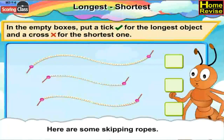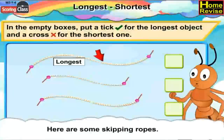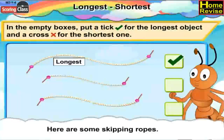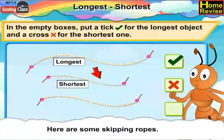Here are some skipping ropes. We'll find the longest rope and the shortest rope. You're right — the first rope is longest, so put a tick in front of it. And the second rope is shortest, so put a cross in front of it.